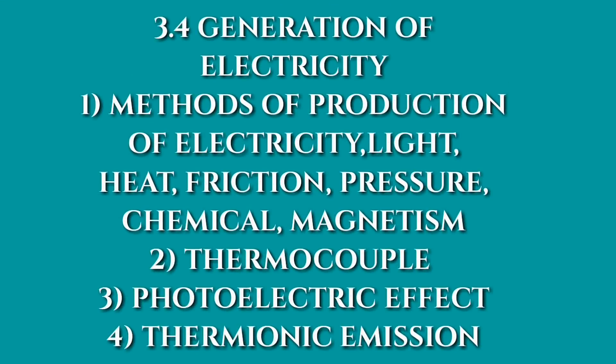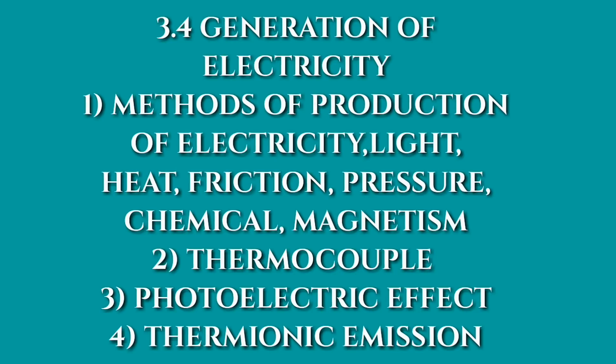Moving on to 3.4, we have generation of electricity, which includes the methods of production of electricity: light, heat, friction, pressure, chemical, magnetism and motion. Also about the thermocouple, photoelectric effect and thermionic emission.